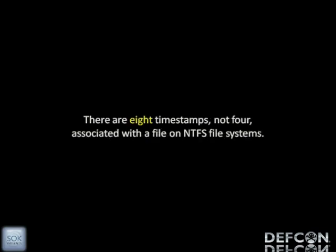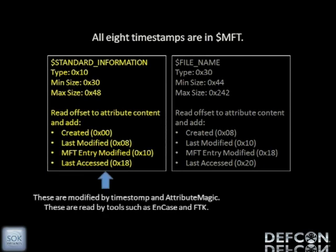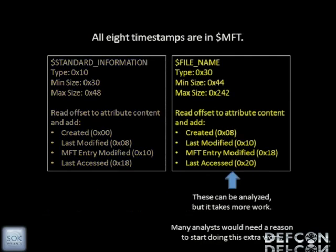Forensic analysts like to reconstruct a timeline, and when they build their timelines, they are built in context — they look at what's happening on an entire machine. There aren't just four timestamps on NTFS systems; there are eight. There are four timestamps under the standard information attribute, identified by hex number 10 — those are the ones picked up by forensic tools and hit by timestomp and Attribute Magic. There's another set of four timestamps under attribute number 30, under file name, and those four match exactly what's in standard information.